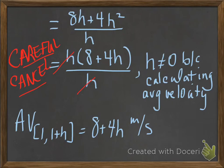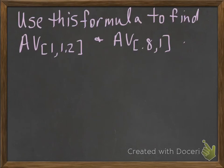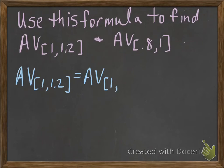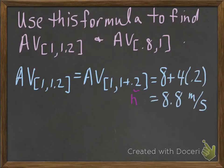Now I'm going to use this formula to calculate average velocity on some specific intervals. The first interval I want to calculate the average velocity on is the interval from 1 to 1.2. Notice that I want to figure out what h is. That's the average velocity on the interval from 1 to 1 plus 0.2, so that means 0.2 is h. Now I can use the formula I just derived, and the average velocity is 8 plus 4 times 0.2, which is 8.8 meters per second.